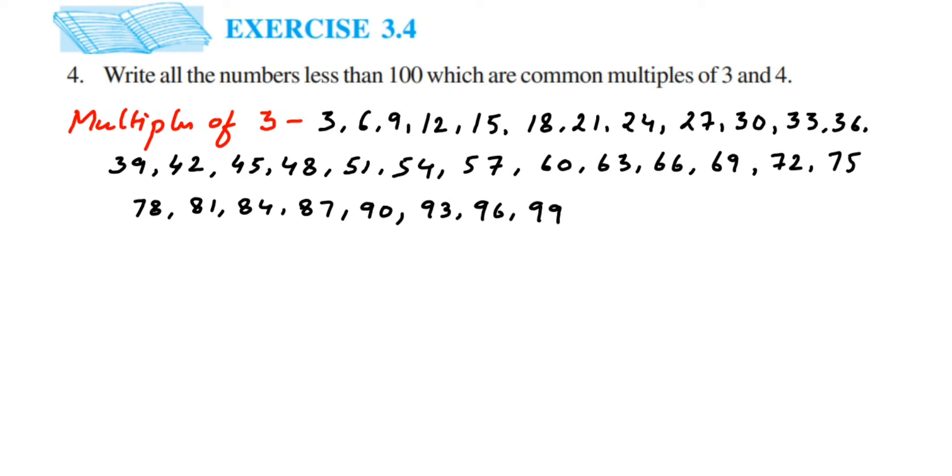Now the same thing for multiples of 4. You can keep multiplying if you know the table, otherwise keep adding 4. So: 4, 8, 12, 16, 20, then 24, then 28, then 32, 36, 40.